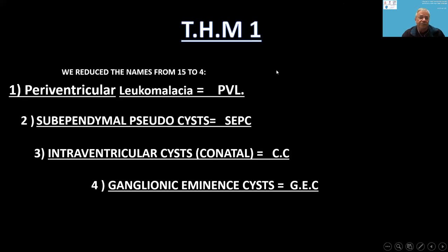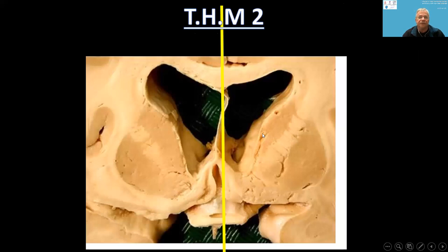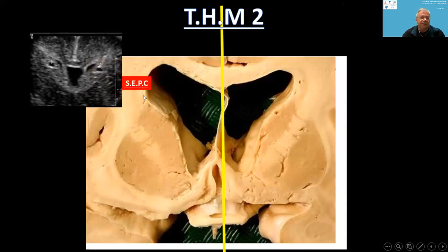My first take-home message: use four functional names — PVL, sub-ependymal pseudocysts, intraventricular conatal cysts, and ganglionic eminence cysts — instead of the 15 names in the literature. Take-home message two: the sub-ependymal periventricular pseudocysts appear in the upper periventricular region.